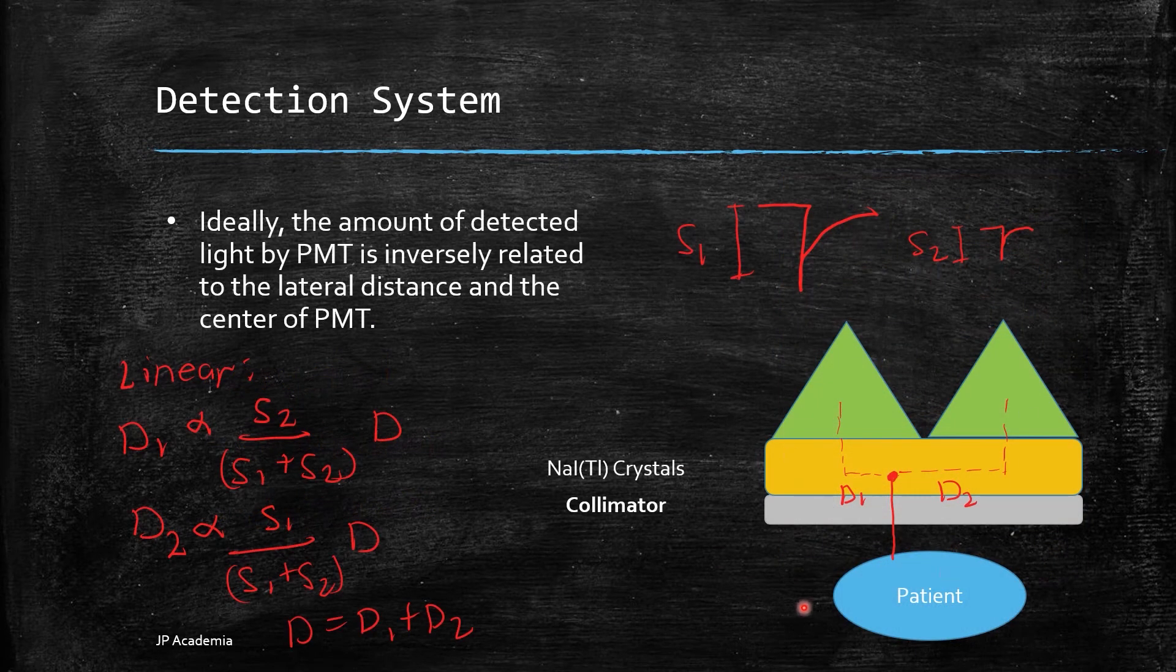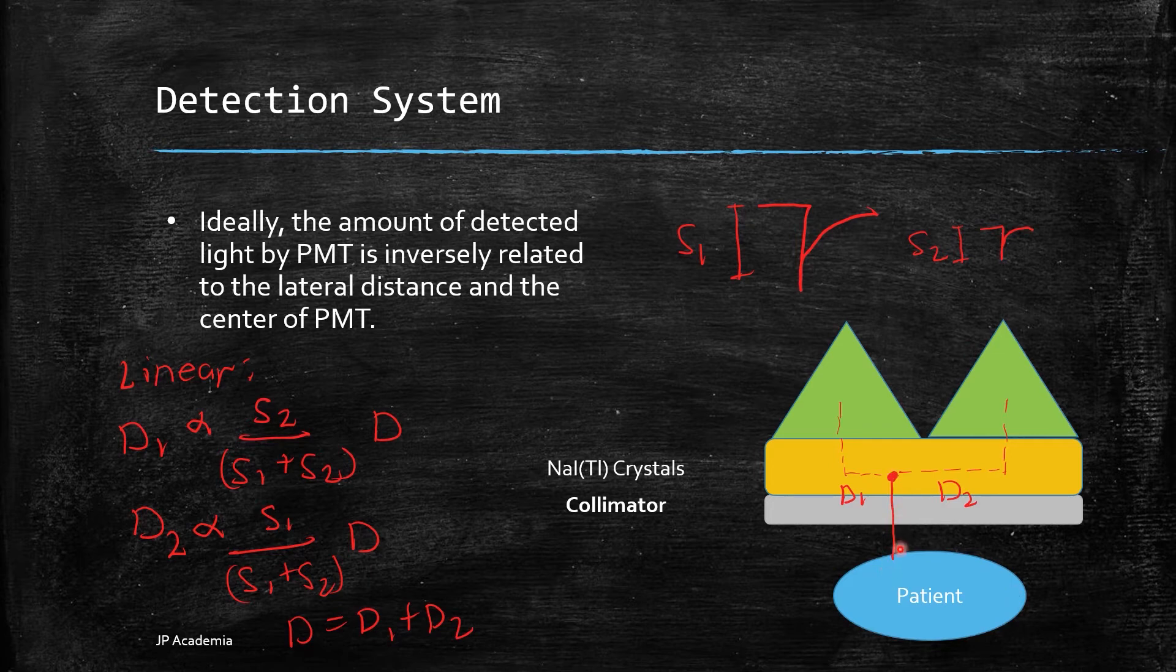Now, let's go to this illustration. Let's say we have a patient emitting gamma ray, a single event. Then this single event is detected by the system with the collimator and the scintillation crystals. D1 here and D2 refers to the lateral distance with respect to the center of our PMTs.